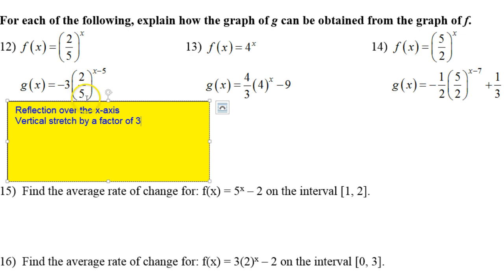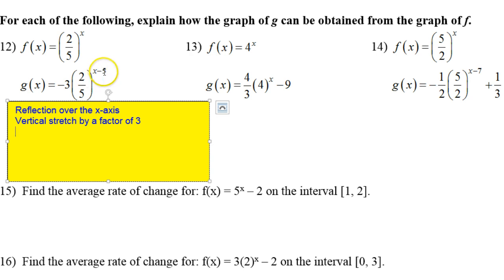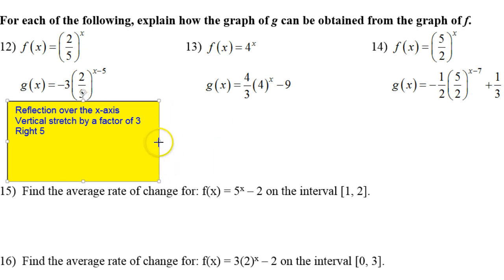Ignore the 2 fifths, because that's just part of the parent function. Now what does the minus 5 do? This minus 5 will be a translation to the right 5. It's kind of the opposite of the way it looks, so I'm just going to put right 5. So those are those transformations.